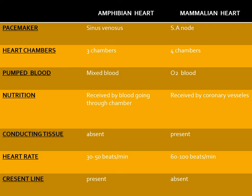Conducting tissue is absent in amphibian heart whereas it is present in mammalian heart. In amphibian heart, the normal heart rate is between 30 to 50 beats per minute, whereas in mammalian heart it is 60 to 100 beats per minute. The crescent line — a line present between sinus venosus and auricles — is present in amphibian heart but absent in mammalian heart.